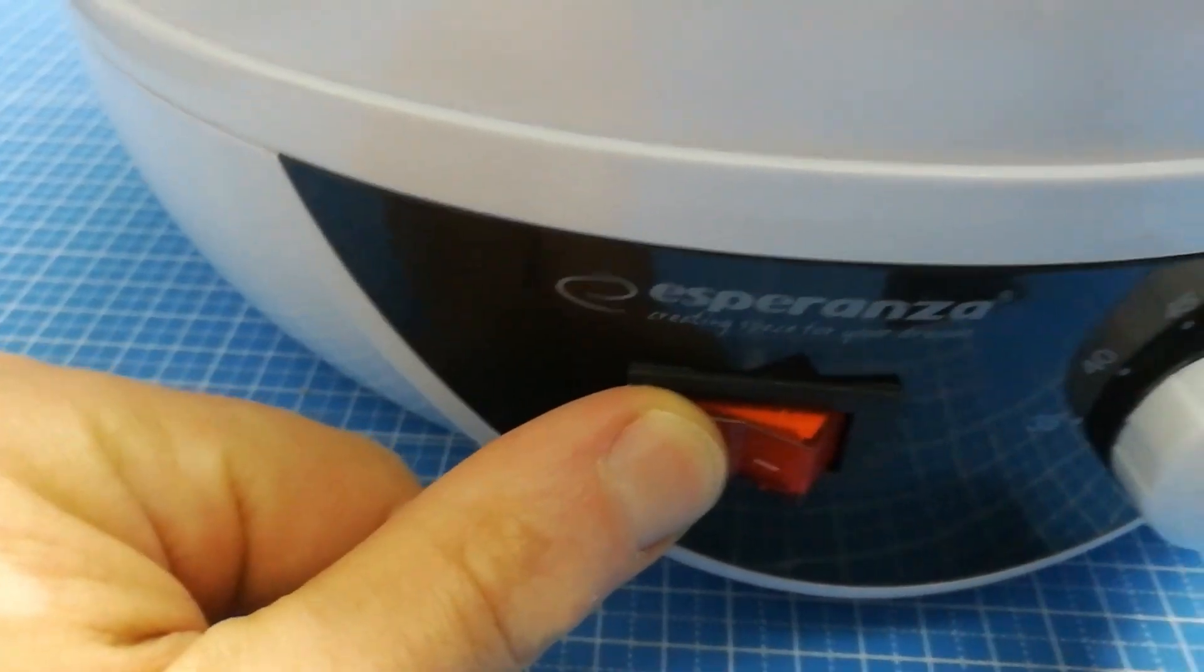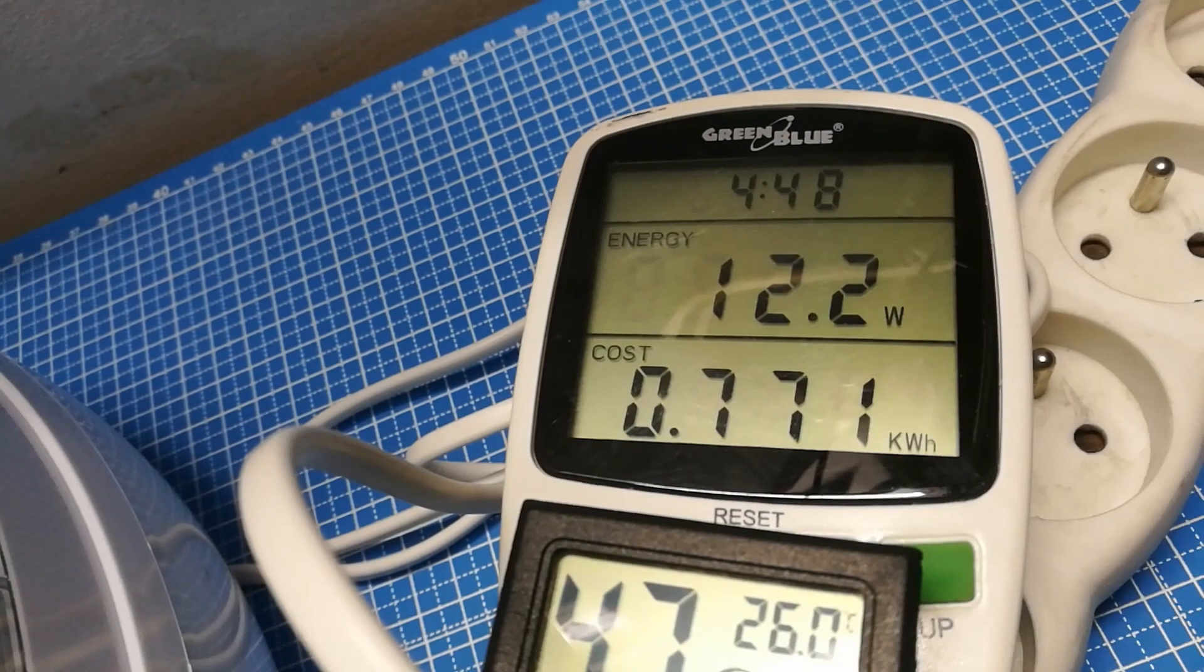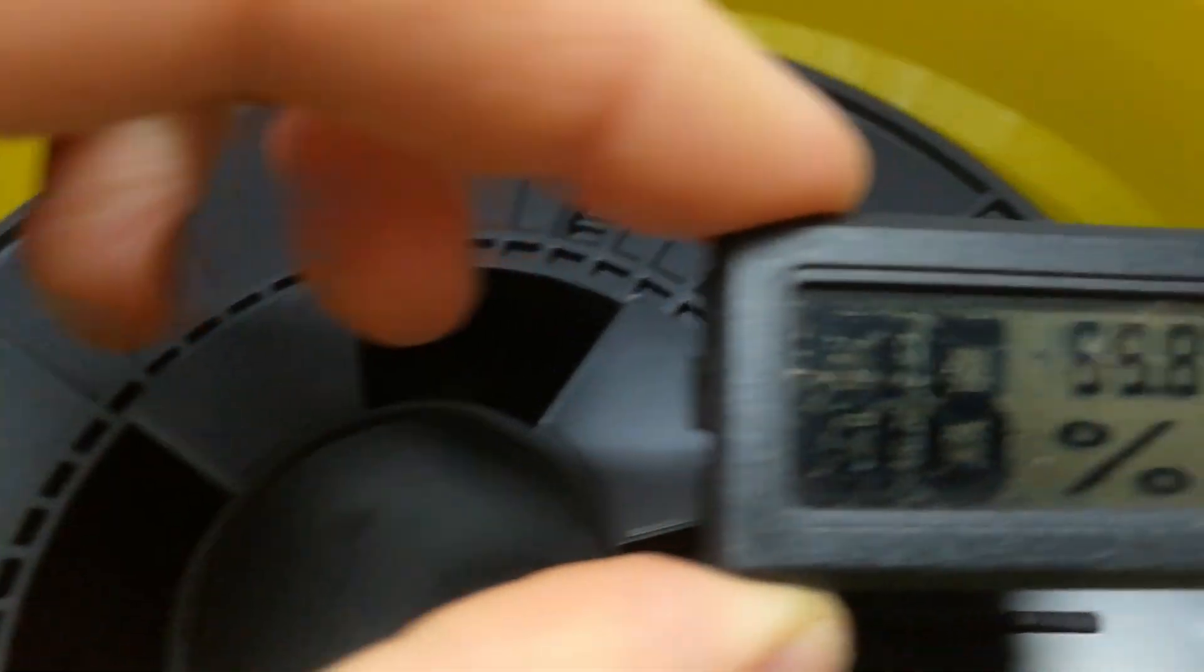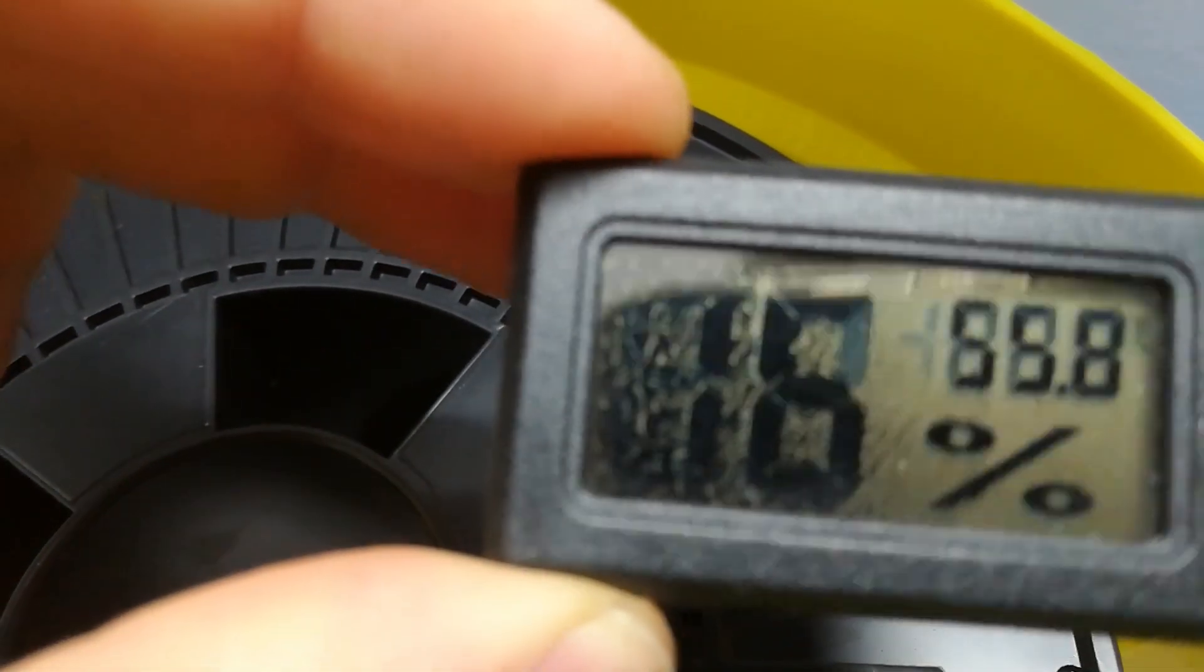After 4 hours and 48 minutes I decided to end the drying. In this time the dryer used 0.77 kilowatt hours. The hygrometer inside the dryer was showing a temperature of 55.8 degrees Celsius. Because there was moisture inside it, I was unable to determine the humidity. Just in case, I flipped the spool and let it dry for another hour.